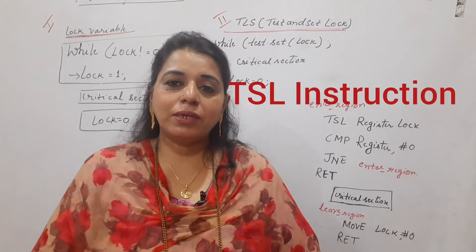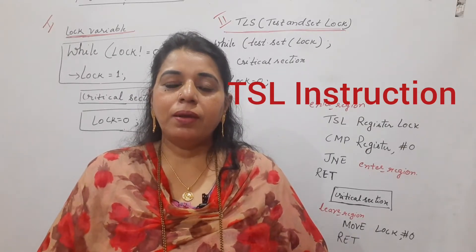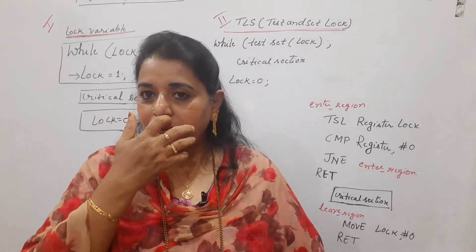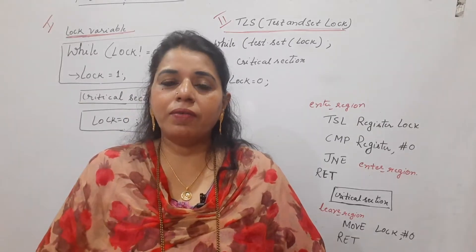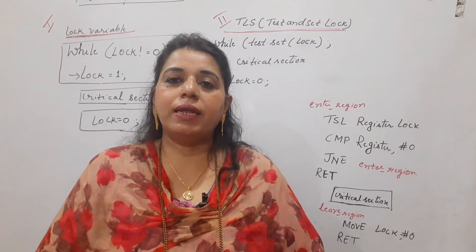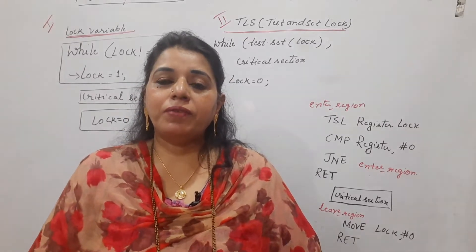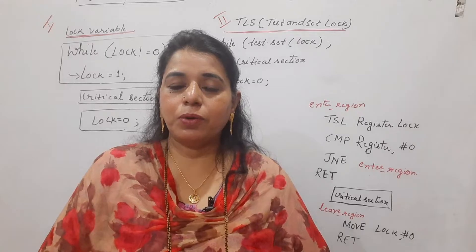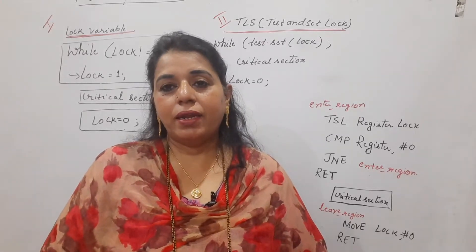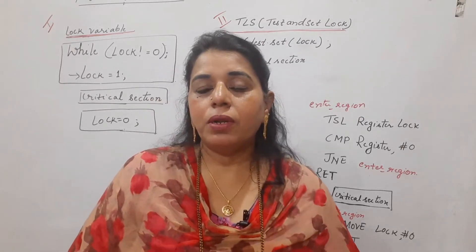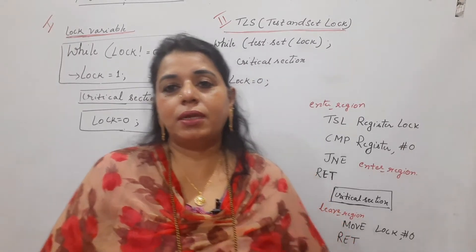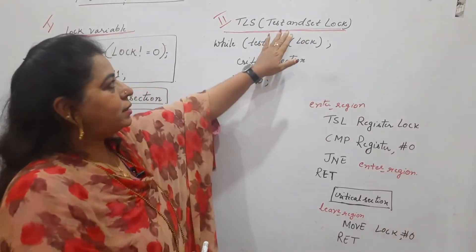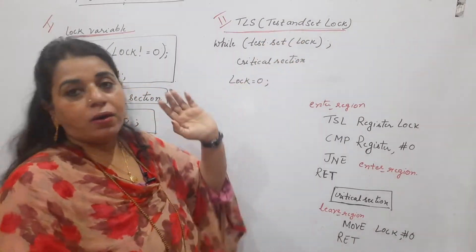The previous solution was using the lock variable. In that previous solution, we could see that the very first condition — mutual exclusion — was not getting satisfied. Now, what about in this solution? This solution is called Test and Set Lock.